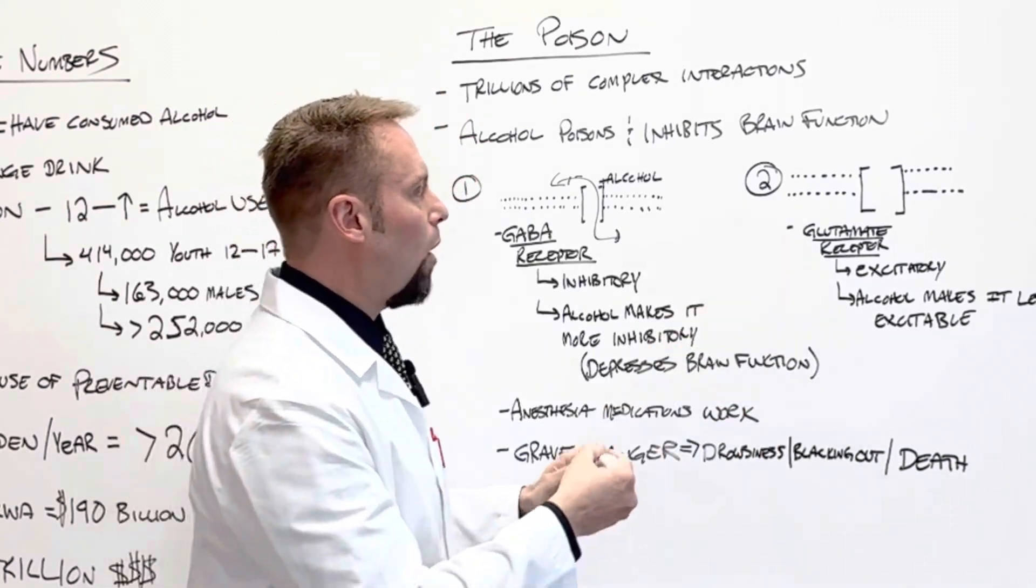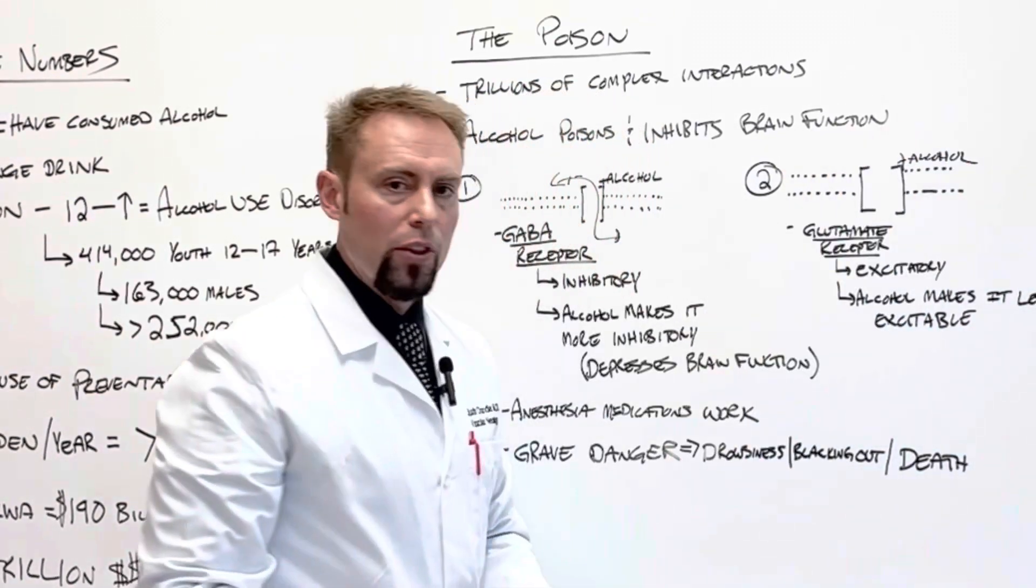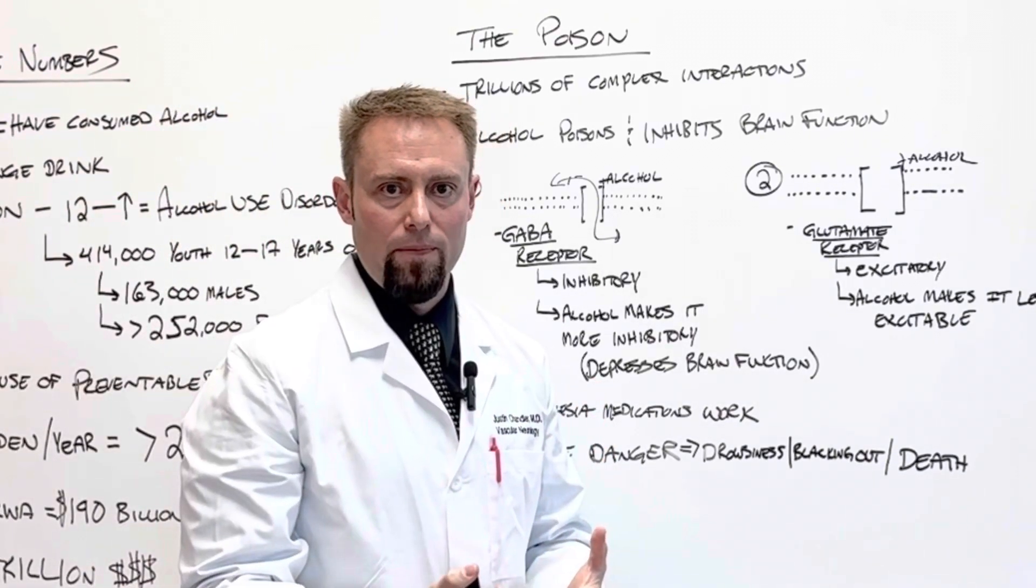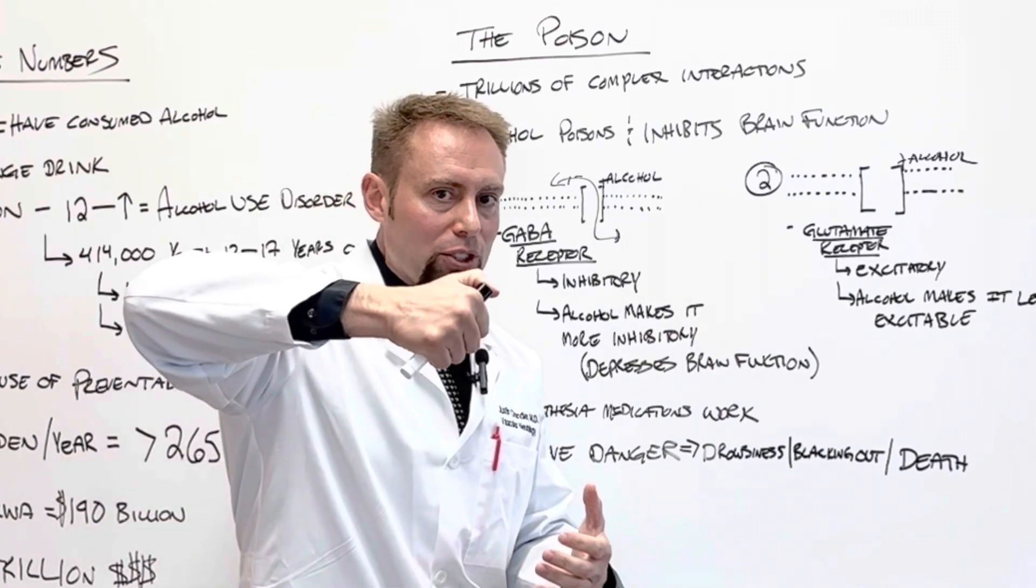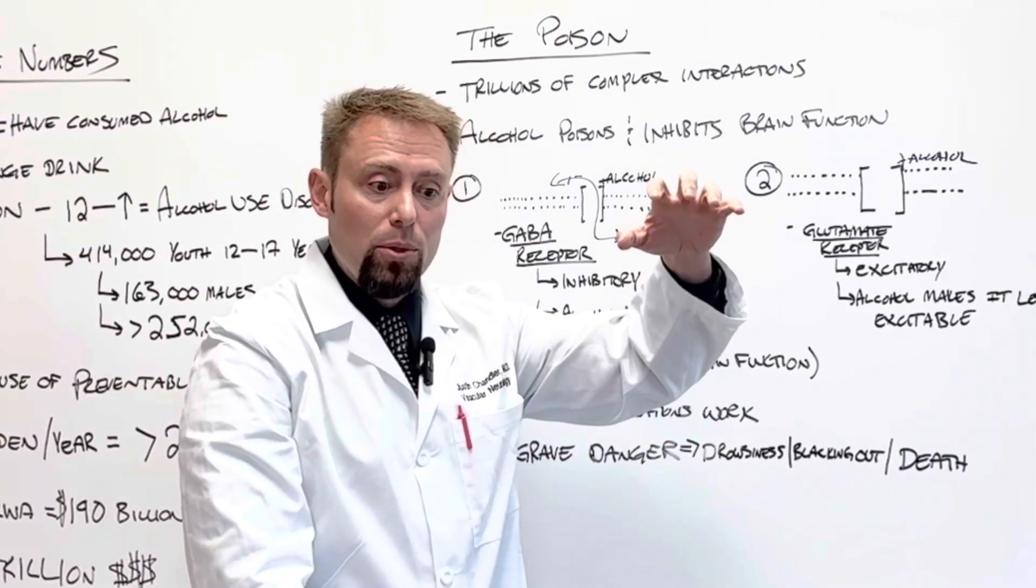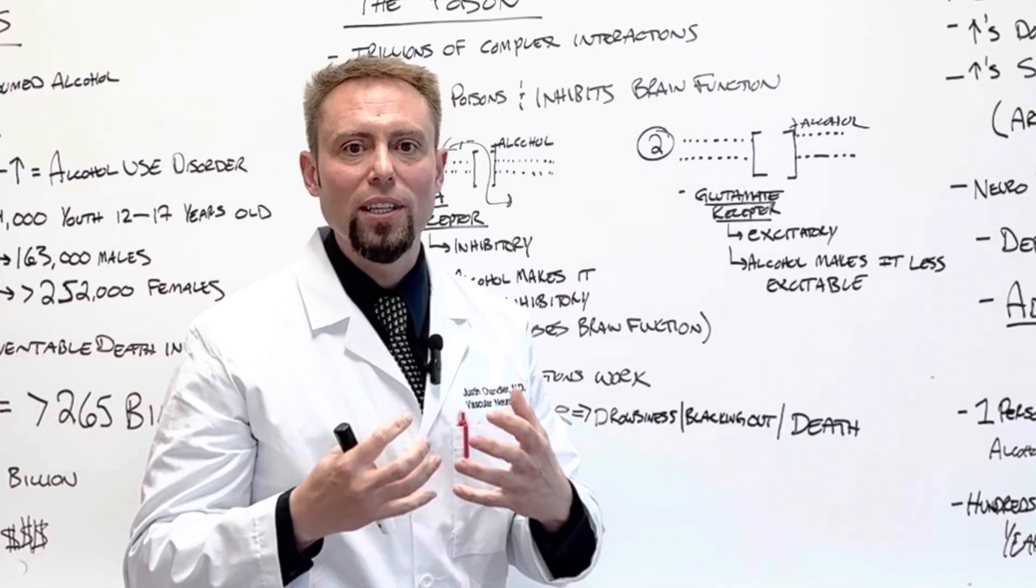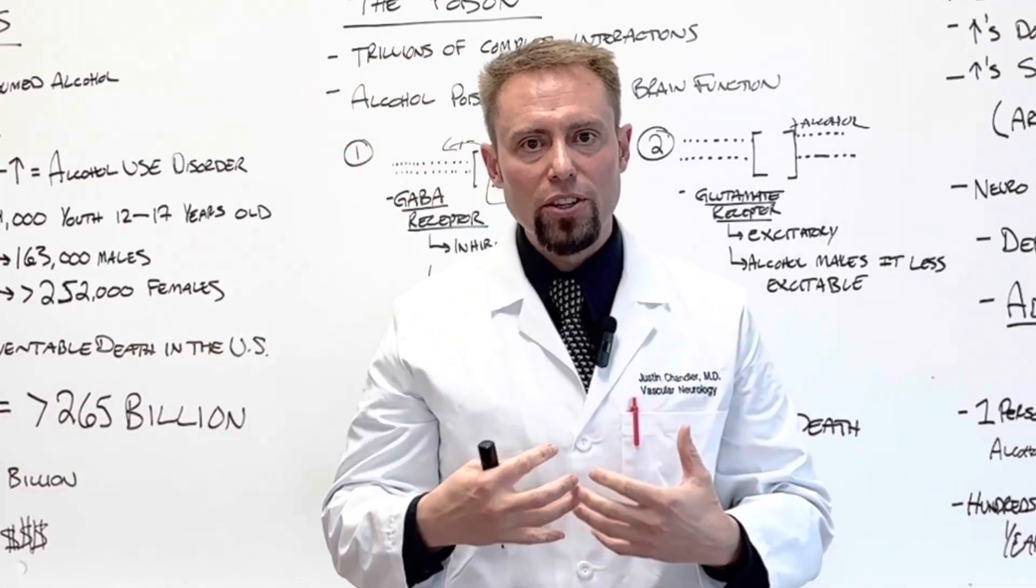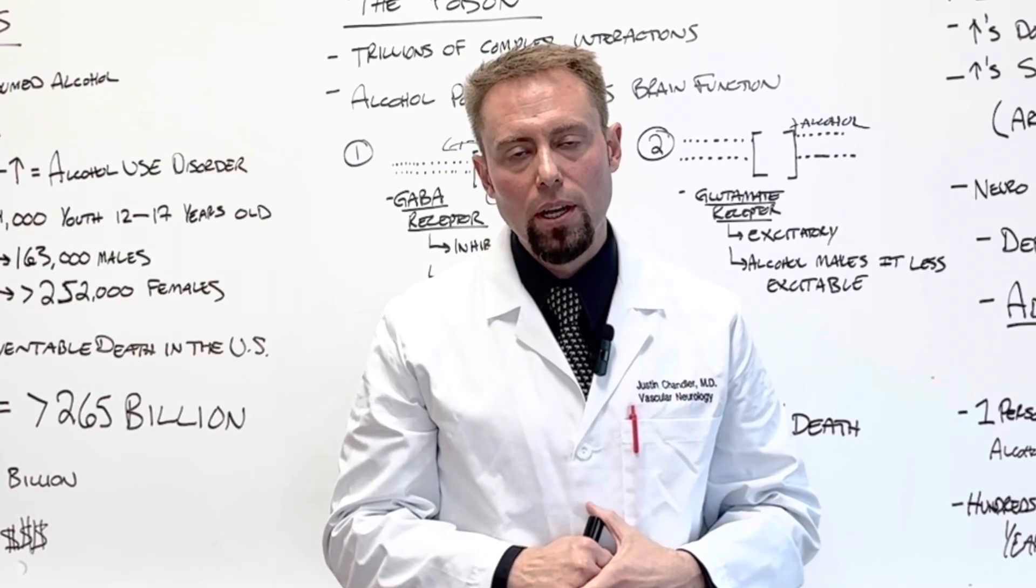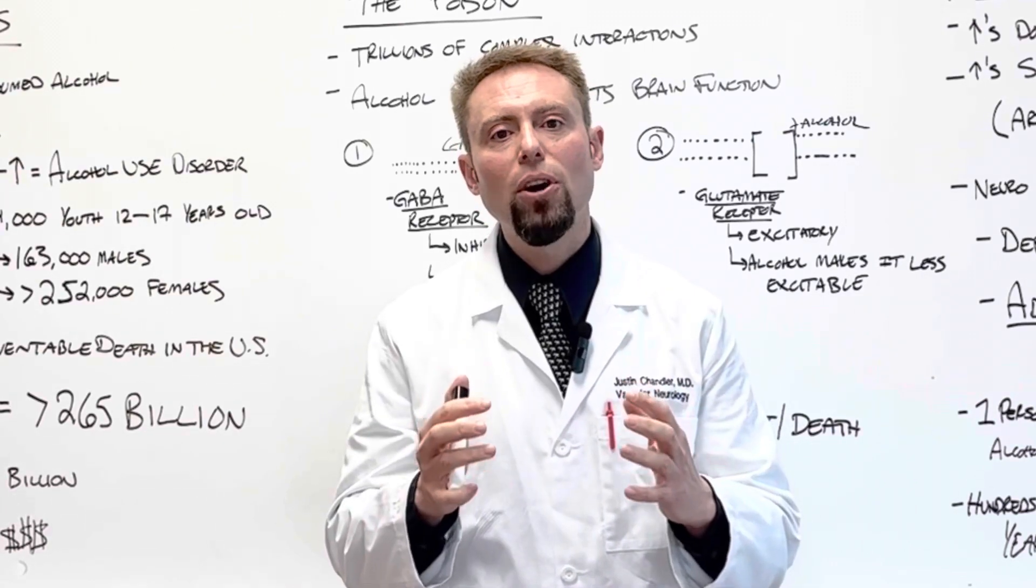What happens when alcohol binds the glutamate receptor is that it makes it less excitable. So not only does alcohol suppress or make inhibition of neurons even more inhibited, it takes the excitable neurons and prevents them from being excitable. This is what leads to the depression that is so prevalent and associated with alcohol consumption. It's also what causes the inhibition. It affects different parts of the brain differently.